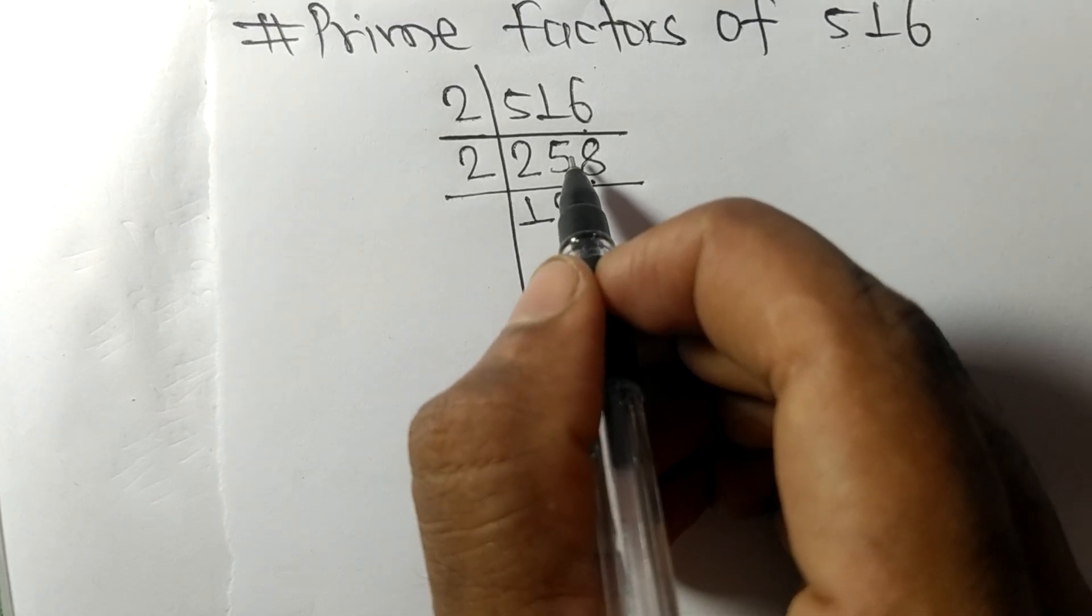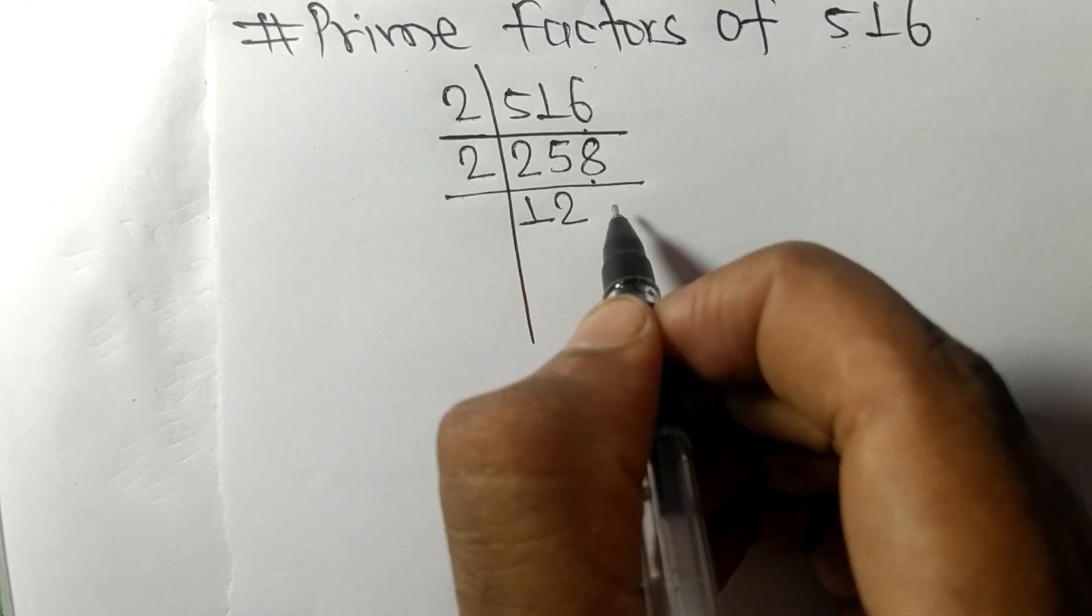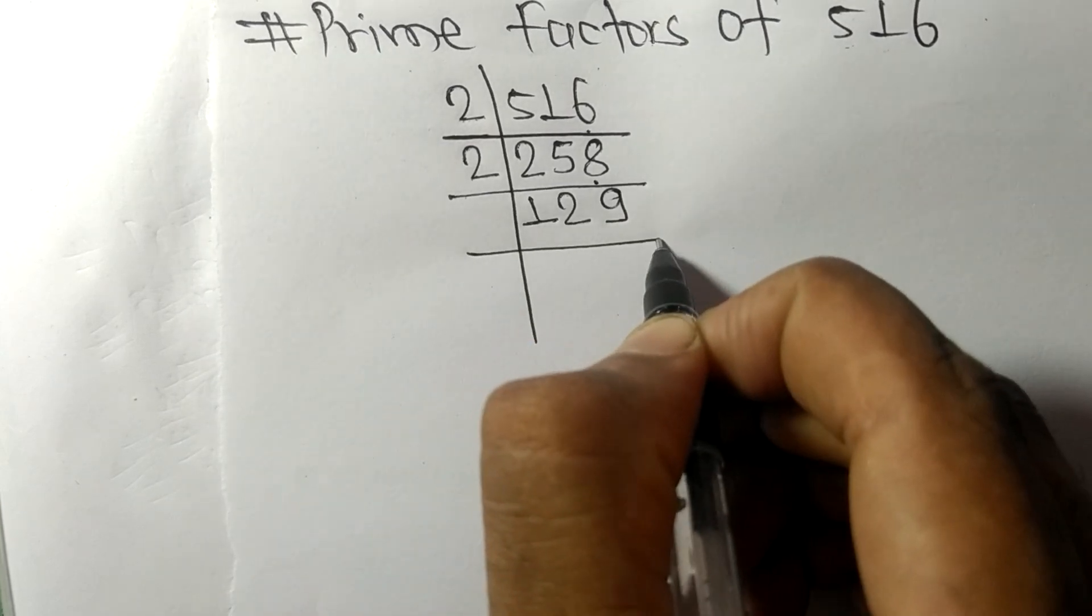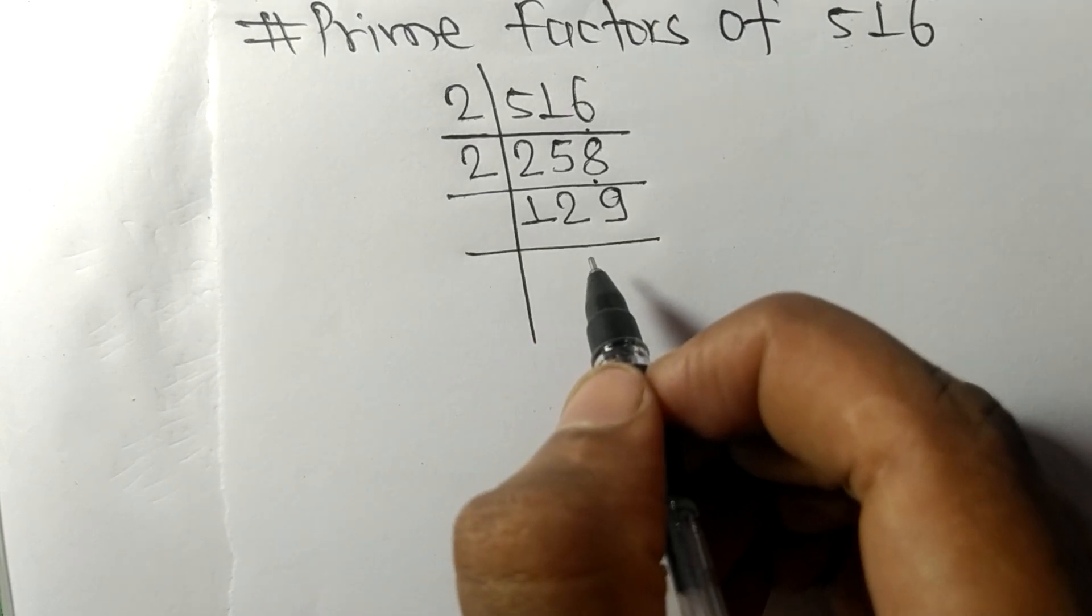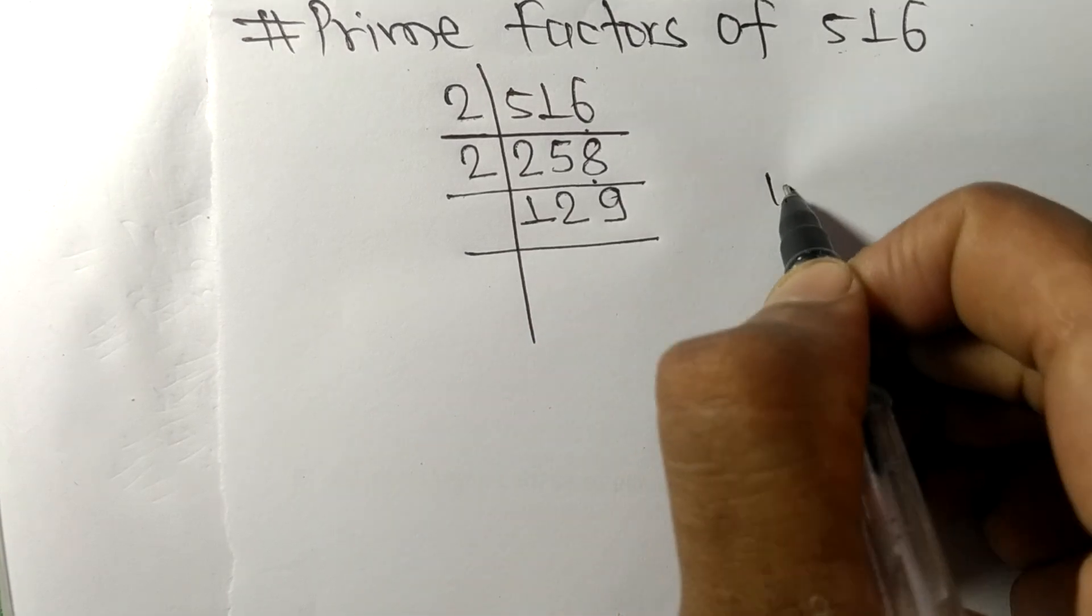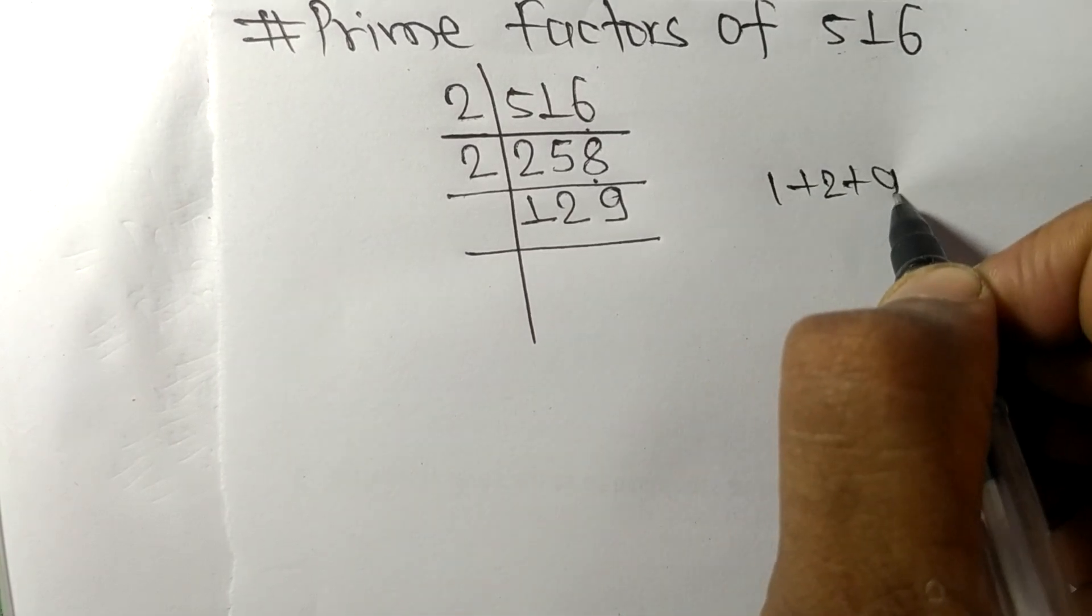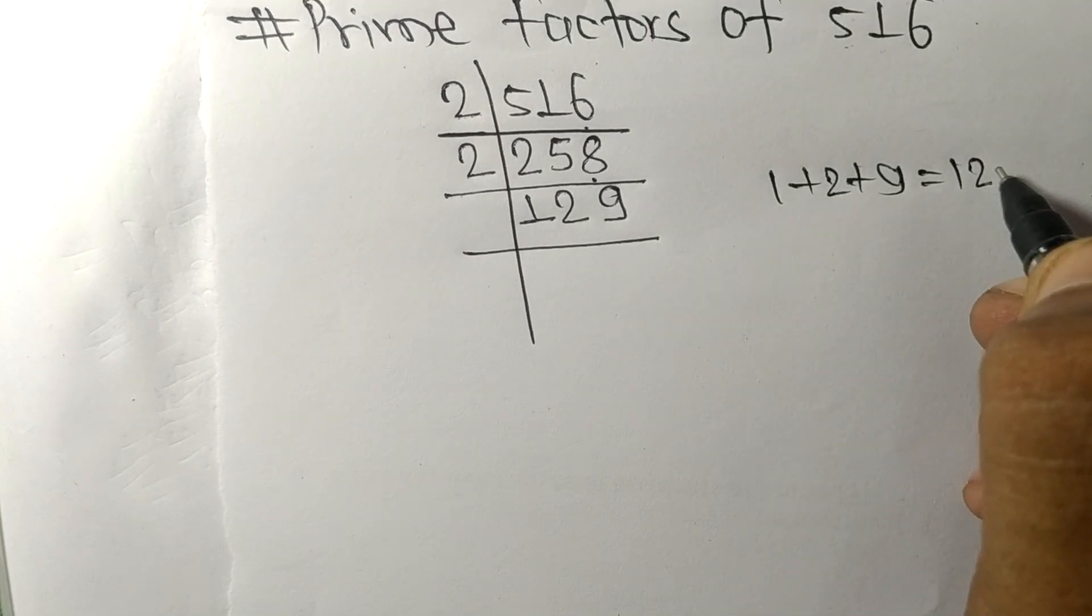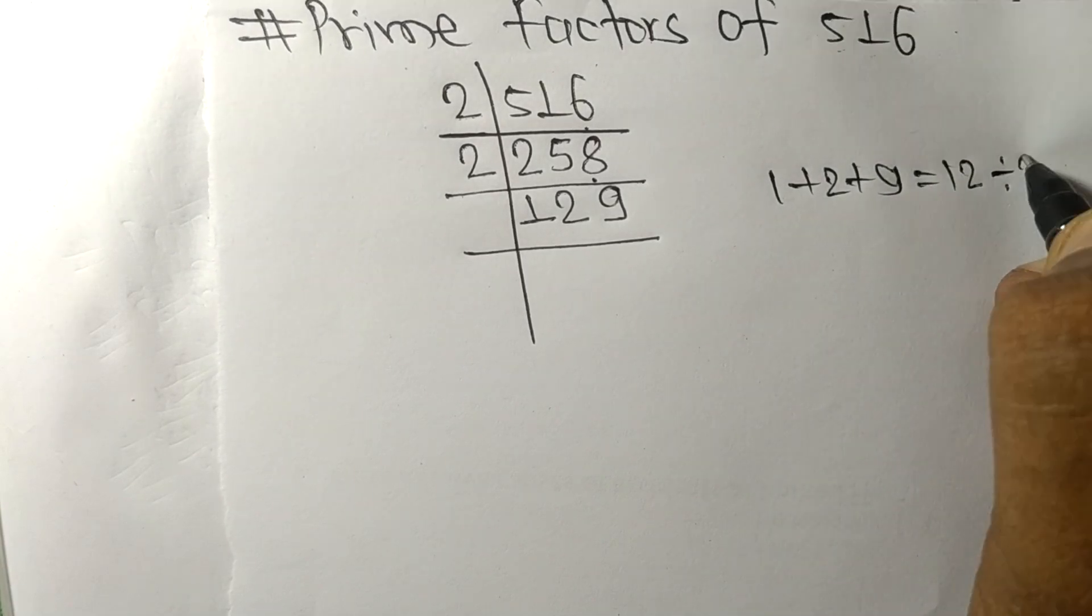2 times 9 means 18. Now we got 129. When we add all these numbers, 1 plus 2 plus 9, we get 12, and 12 is exactly divisible by 3, so 129 is also divisible by 3.